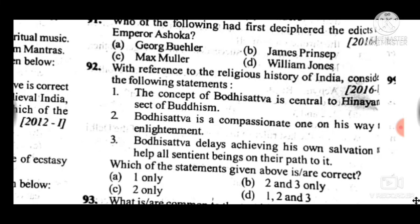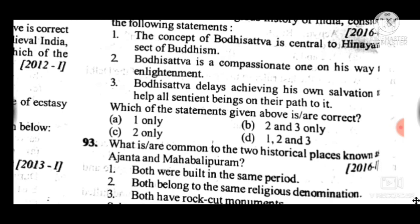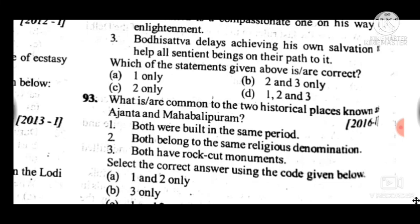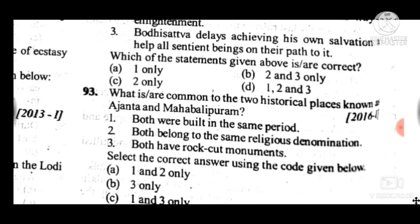Question 93: What is common to the two historical places Ajanta and Mahabalipuram? Answer is B — three only; both are rock monuments. This is the correct option.